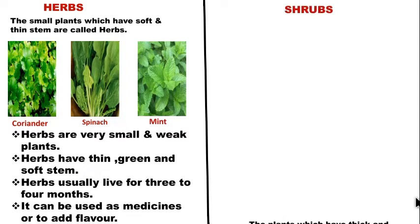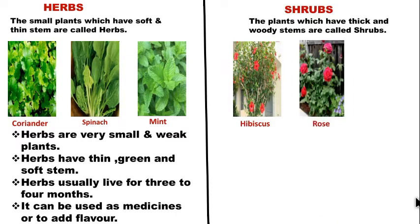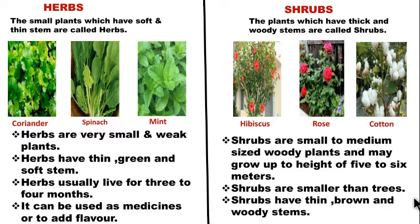The next type of plants are shrubs. Plants which have thick and woody stems are called shrubs. For example: hibiscus, rose, cotton etc. Shrubs are small to medium sized woody plants and may grow up to a height of 5 to 6 meters. As you can see in this picture, the hibiscus plant has a thick and woody stem. Shrubs are smaller than trees and have thin brown and woody stems.